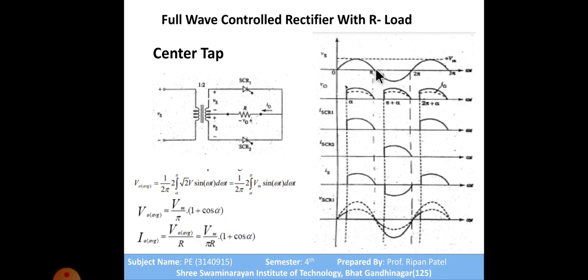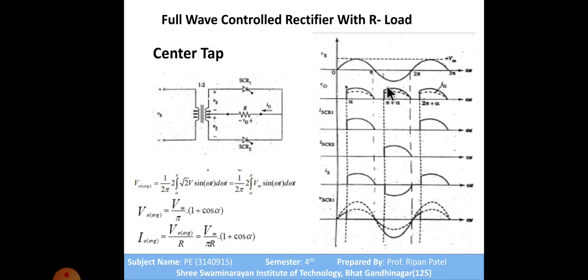At pi, the current becomes zero, so SCR1 comes into the off state due to natural commutation. Now the polarity changes - this terminal becomes positive for the other half. SCR1 goes into reverse bias while SCR2 comes into forward bias. We give gate pulses to SCR2, and it fires at pi plus alpha in the negative half cycle.